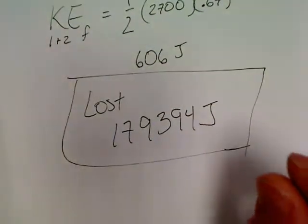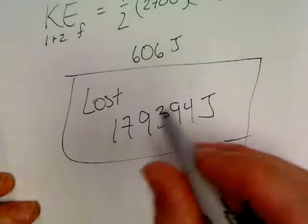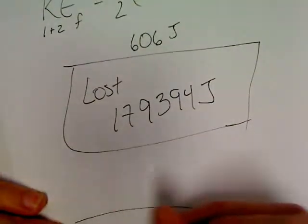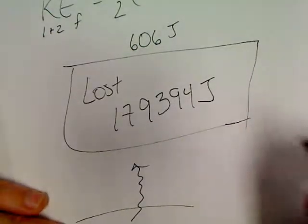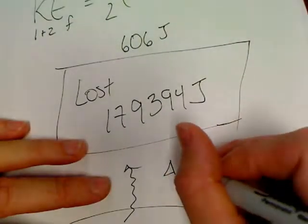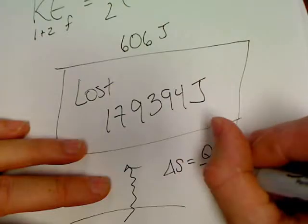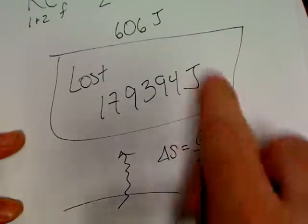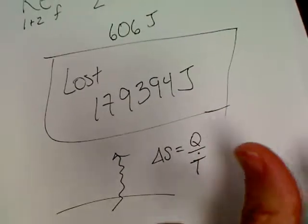After the crash, kinetic energy final. This kinetic energy now includes objects one and two, they're both stuck together. One-half times 2700 for their combined masses times the final velocity, 0.67 squared. Half times 2700 times 0.67 squared equals 606. Look at this. You had pre-crash 180,000 joules of energy, minus 606, you've lost 179,394 joules of energy. Where did that energy go? It went into the deformation of the two vehicles, which later becomes heat which escaped to the atmosphere. That's a very common question to be asked. Love that question.